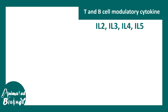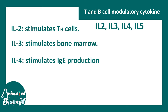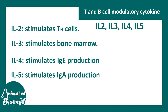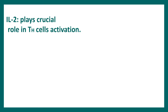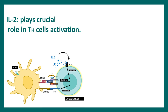Now let's discuss IL2, IL3, IL4, and IL5. IL2 is very important for T cell activation. IL3 stimulates the bone marrow stem cell niche. IL4 stimulates IgE production and IL5 stimulates IgA production. Class switching is triggered by IL4 and IL5.